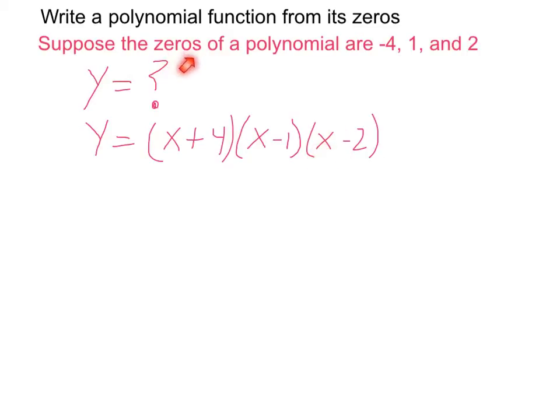So zeros, the values of x for which y is equal to 0, can tell us what our function is going to look like.